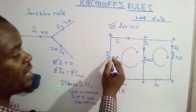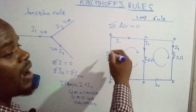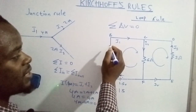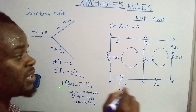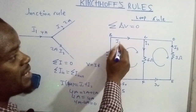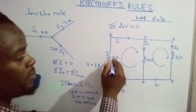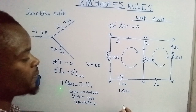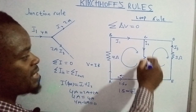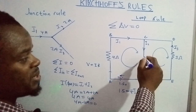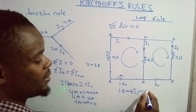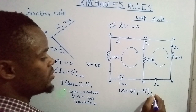As you traverse through a resistor in the direction of the current, there will be a potential drop, meaning the potential difference is negative. Potential difference is given by current times resistance. Since it's a potential drop, it is negative, so we record it as minus R times I — for example, minus 4 times current one, then minus 6 times current two.